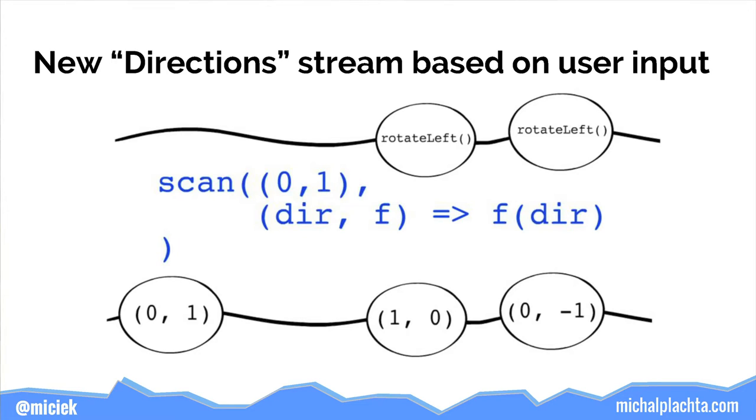This is our new direction stream. The old one was just (0, 1) every 100 milliseconds. This new one changes direction each time the user presses something. The scan operator scans through the input stream with an initial accumulator value of (0, 1) — our initial direction — and we accumulate functions by applying them to the current direction and outputting it to the output stream.